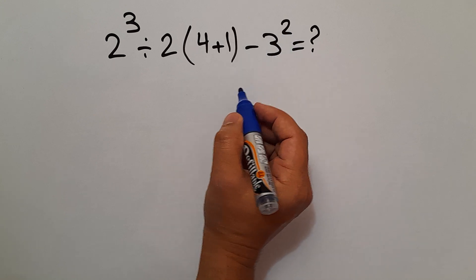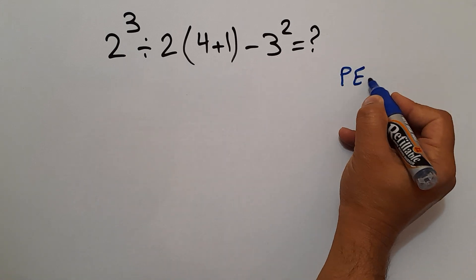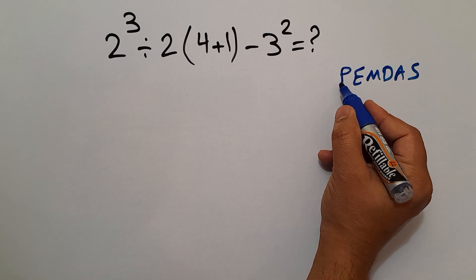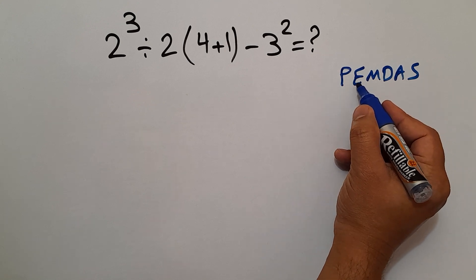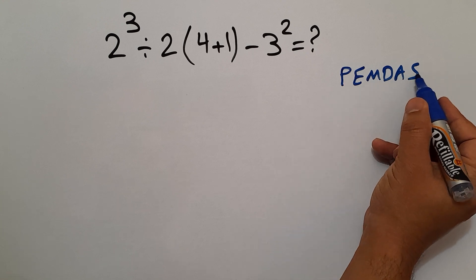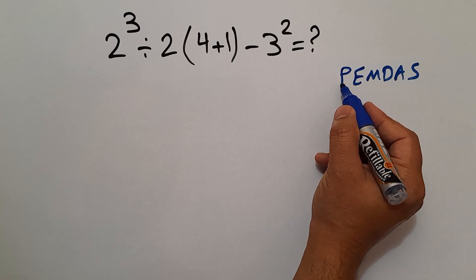According to the order of operations, which is PEMDAS, P stands for Parentheses, E stands for Exponents, M and D stands for Multiplication and Division, and A and S stands for Addition and Subtraction. We first do parentheses, then exponents, then multiplication and division, and finally addition and subtraction.